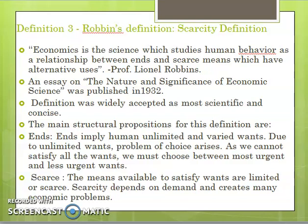These are the two important parts of this definition. Economics is a science which studies human behavior. Human behavior as a relationship study is economics. This definition comes from his essay on the nature and significance of economic science, published in 1932. The definition was widely accepted as the most scientific and concise definition.